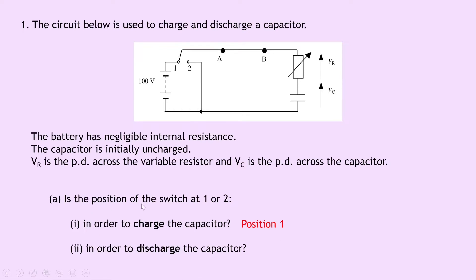Part 2 asks for the switch position to discharge the capacitor. To discharge, we move the switch to position 2, so that the current that was building up on the capacitor plate now starts discharging and moving off in the backwards direction, flowing along this path and back through the resistor. This way the capacitor is not connected to the power supply, allowing the current to flow off the plates. So the answer is position 2.